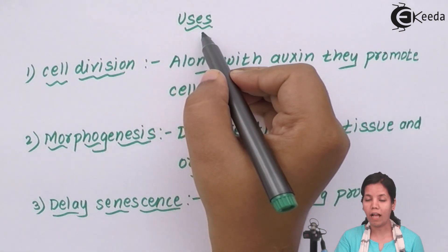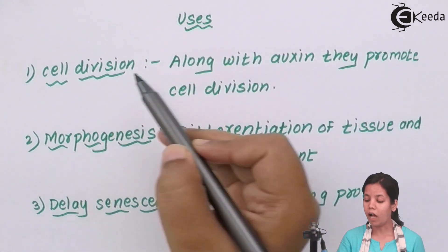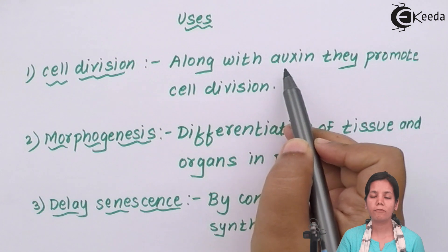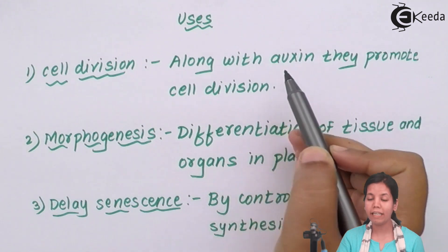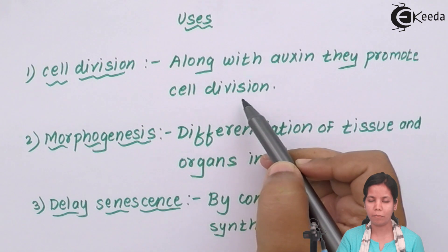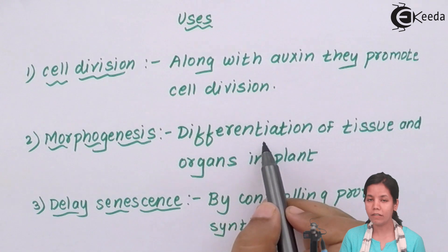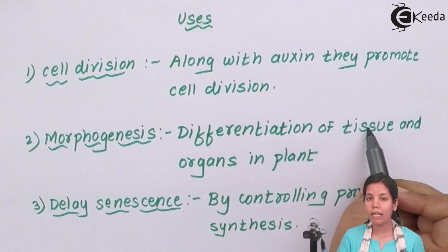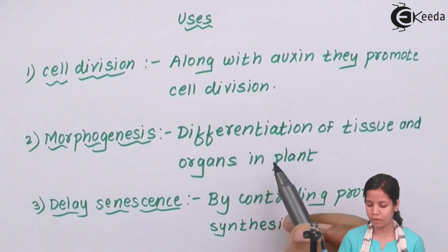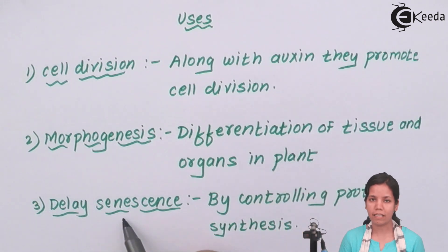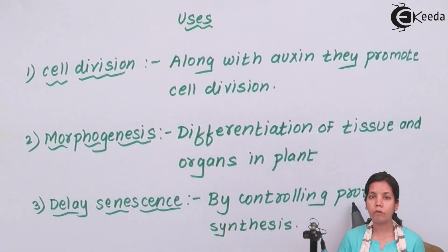The uses of cytokinins are: first, cell division — along with auxins, the first growth hormones, cytokinins also help in cell division and growth of the plant through meristematic tissues. Second, morphogenesis — the formation of various plant parts such as roots, stems, and leaves, and differentiation of tissues into parenchyma, colenchyma, and sclerenchyma and other organs. Lastly, delay senescence — preventing untimely falling of roots, stems, and leaves through formation of a protein.